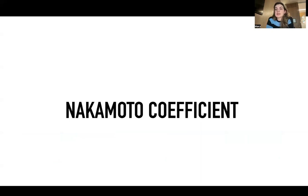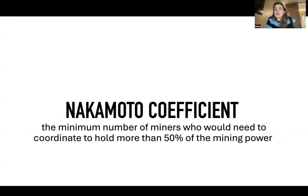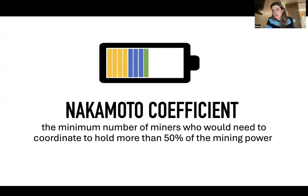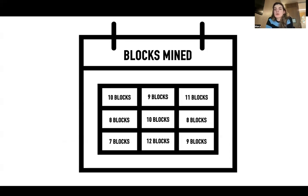It's an integer which is the minimum number of miners who would need to coordinate to hold more than 50% of the mining power. So, if we return to this example with the battery, here we see a ledger where it would take three people to work together to exceed this 50% threshold, and our Nakamoto coefficient would be three. But how do we quantify mining power? Most researchers will look at the proportion of blocks that were mined in a given time period, and very often this is done on a daily basis.